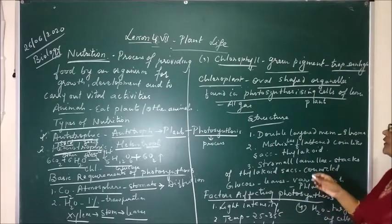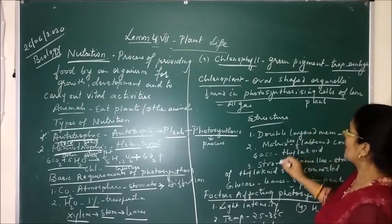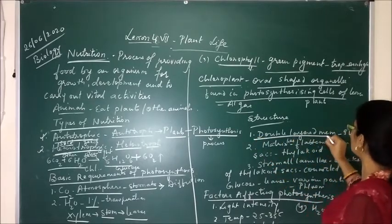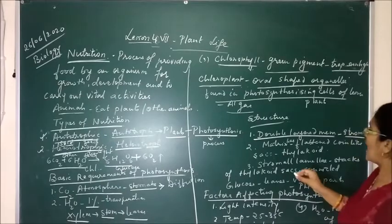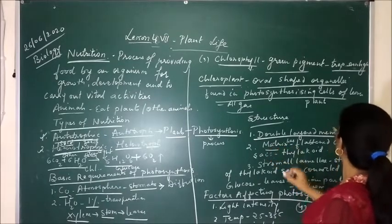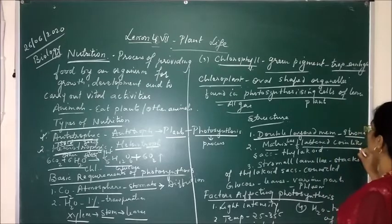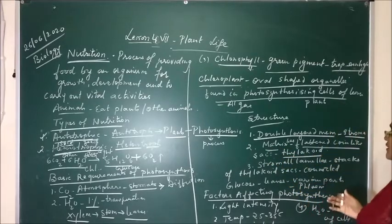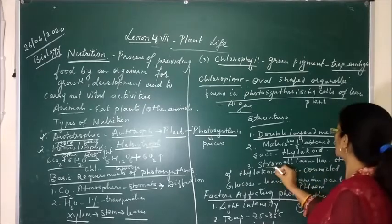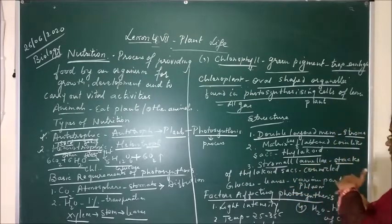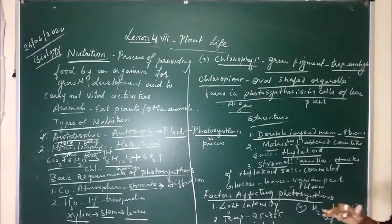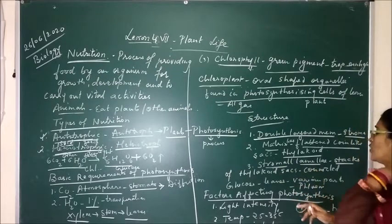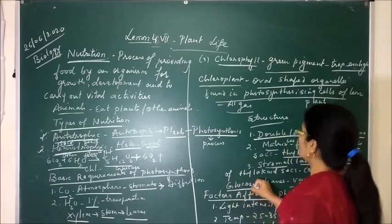If you study the structure of the chloroplast, it consists of a double membrane layer surrounding the stroma. Within the stroma there are flattened, stacked structures called thylakoids arranged in piles. These stacks are connected by stromal lamellae, which link the thylakoid layers together one by one.